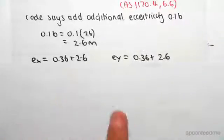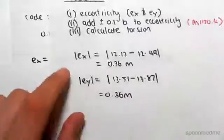Working out the new eccentricity, we're just going to be adding 2.6 to the eccentricity in the x and y direction.